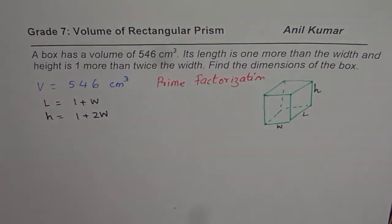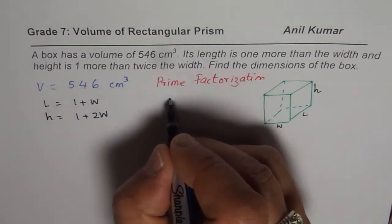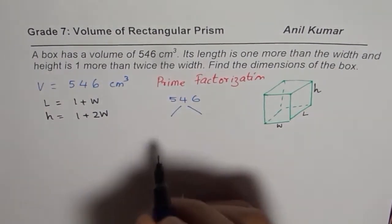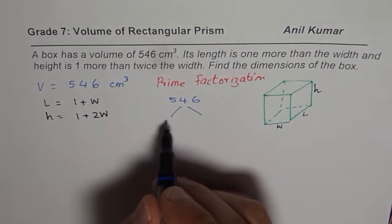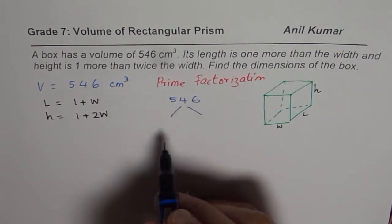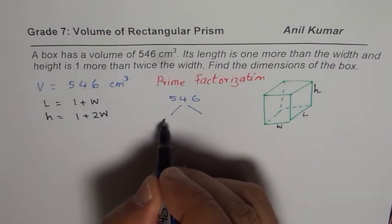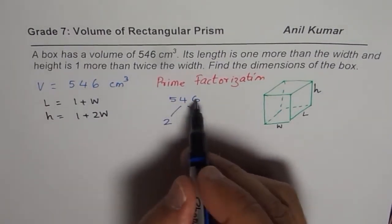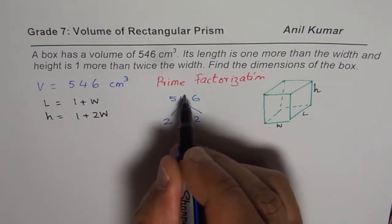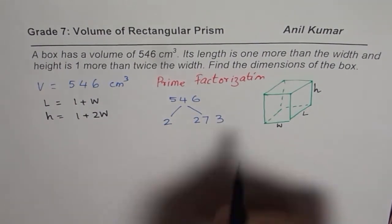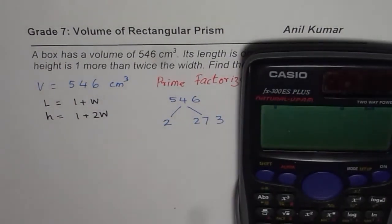So here, what we have is a number which is 546. So let us find factors of these numbers. Factors are numbers which when multiplied gives you the product as the number itself. So let us begin by dividing this by prime number 2. Half of this is 273. You can use calculator. So it is 546 divided by 2 equals to 273.